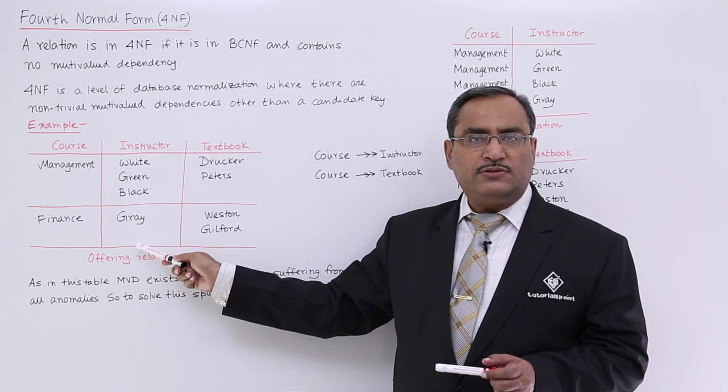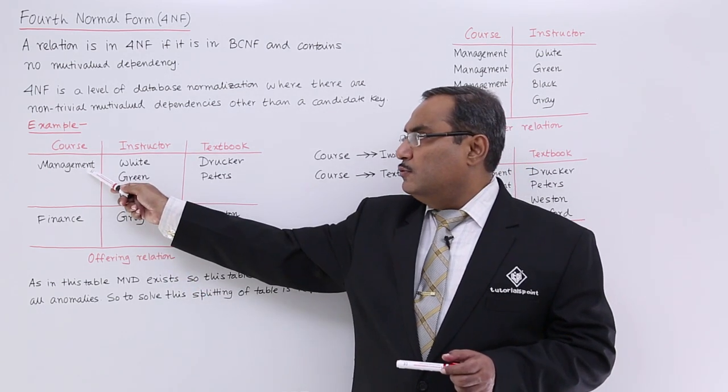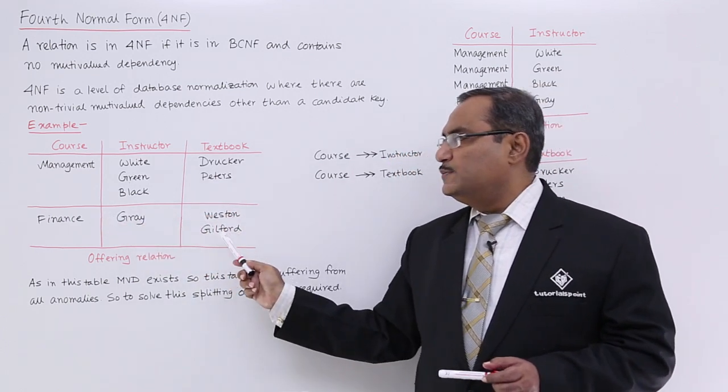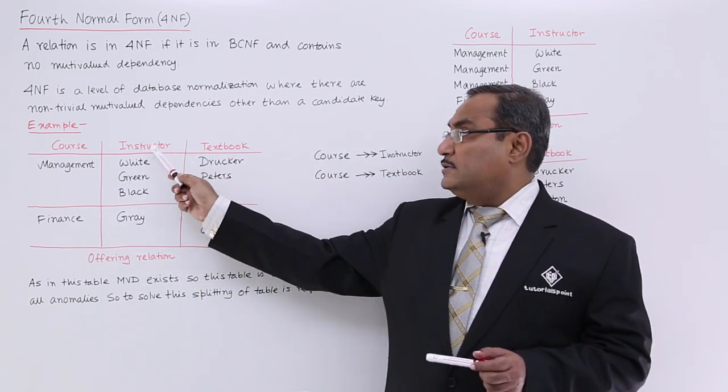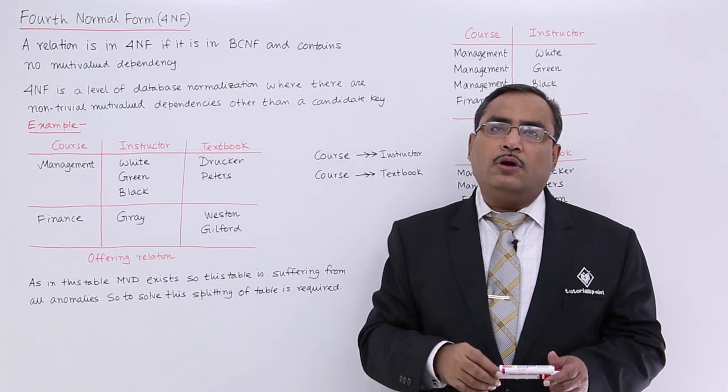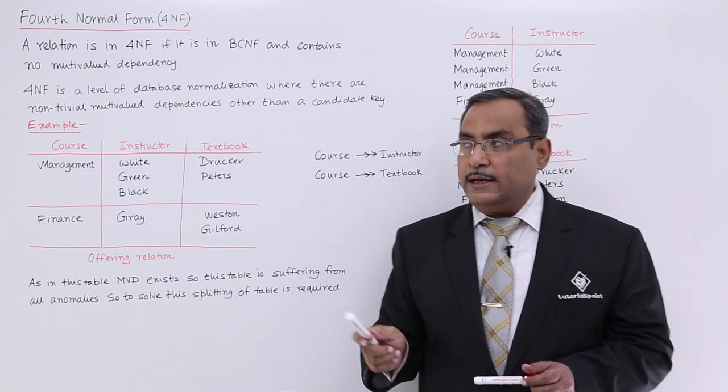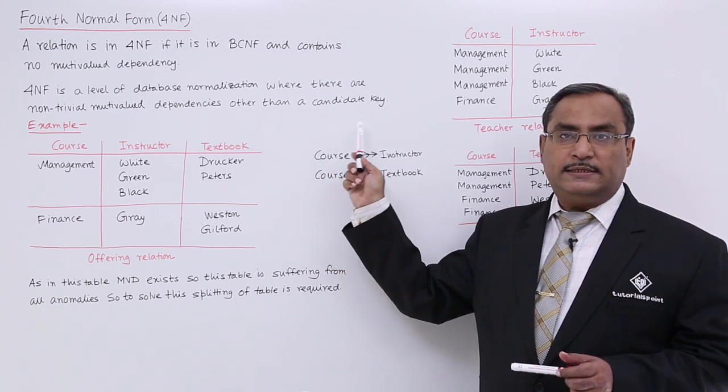For a certain value for course, we may be having set of values for the textbooks. But instructor and textbook, they are not related. Then we shall say that multivalued dependency is existing.